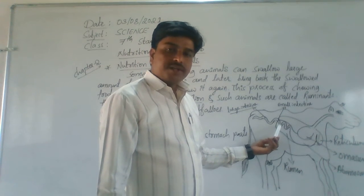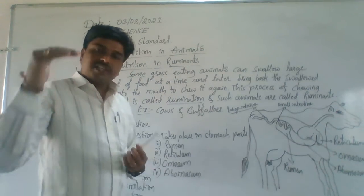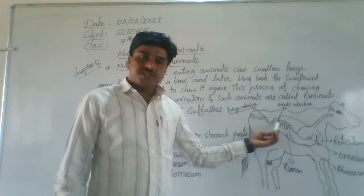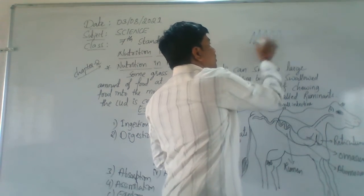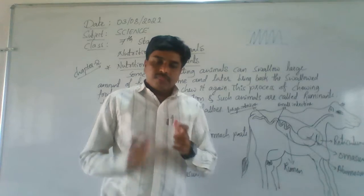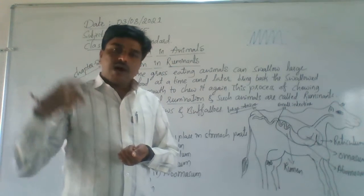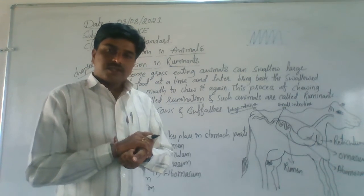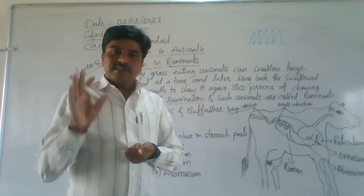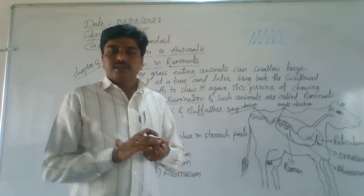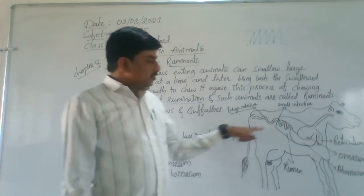After complete digestion in the abomasum, the digested food passes through the small intestine, where absorption of food takes place. The small intestine contains villi — finger-like projections — which increase the surface area for absorption. The absorbed food is sent to all body cells by the blood. In the cells, the food is completely oxidized and releases energy; this process is called assimilation.